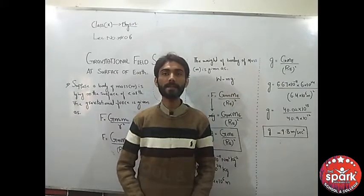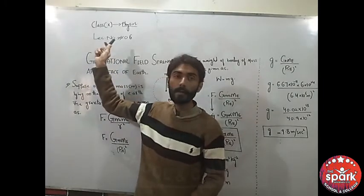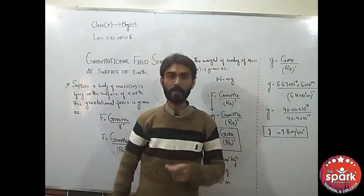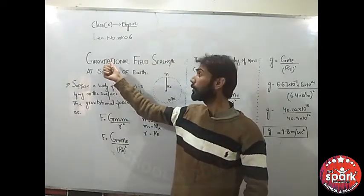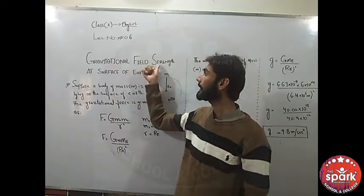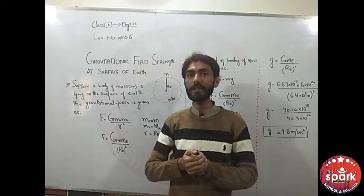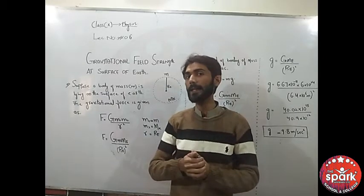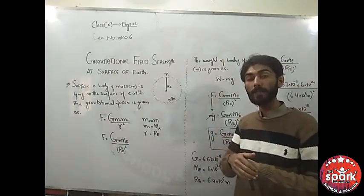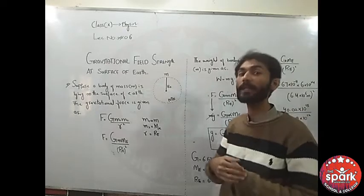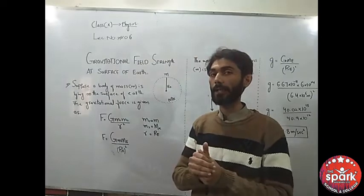Welcome students, this is Danya Khan. Today we are here with lecture number six, physics for class matric. Today we are going to derive the formula for gravitational field strength at the surface of Earth. We will discuss how we can calculate the gravitational field strength at surface of Earth. Suppose that a body has mass m.